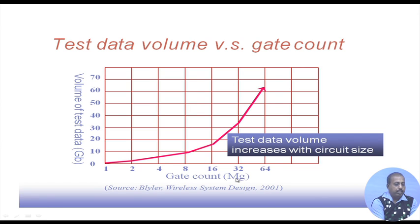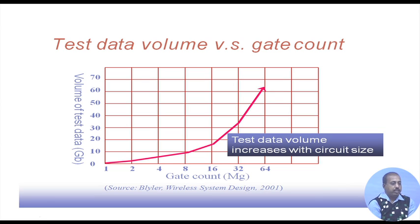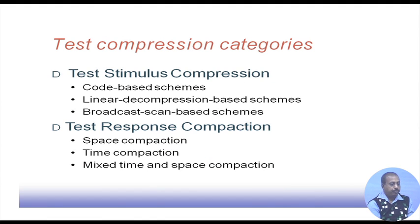This graph shows test data volume versus gate count. As gate count increases in terms of mega-gates, the volume of test data — in gigabits — is increasing at an exponential rate. So as circuit size increases, the volume of test data grows exponentially, making it a requirement that we incorporate some sort of test compression mechanism.